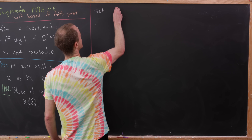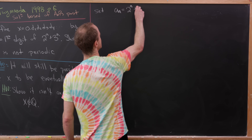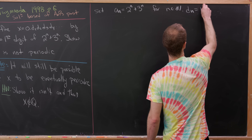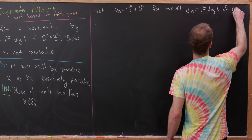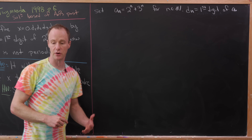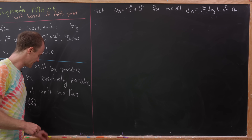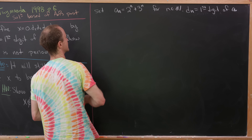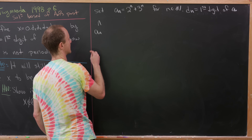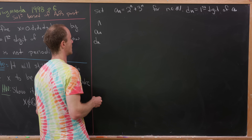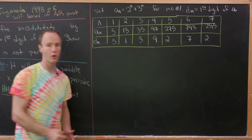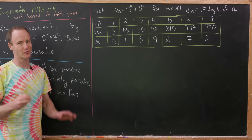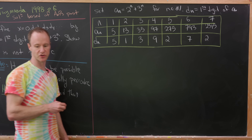Let's introduce some notation. Set a_n = 2^n + 3^n for natural numbers n, and d_n will be the first digit of a_n. Let's make a little chart of n, a_n, and d_n just to get an idea of what's going on. We've got a portion of our chart finishing at n = 7, and while these calculations are fairly elementary, I'll let you check those if you need to.